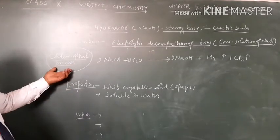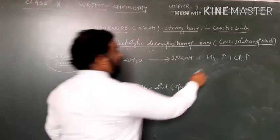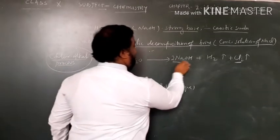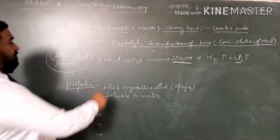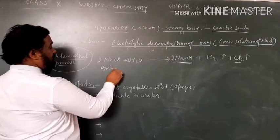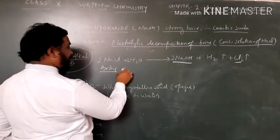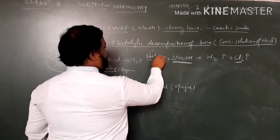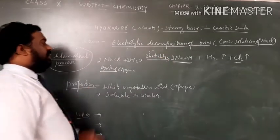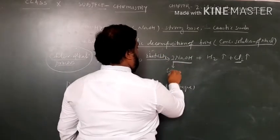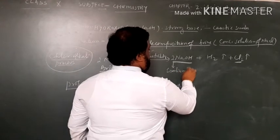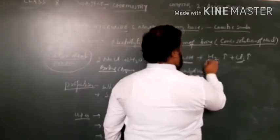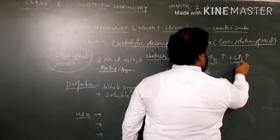In this process, chlorine is formed and alkali is formed. Here, brine aqueous with the help of electricity produces sodium hydroxide, hydrogen gas, and chlorine gas.